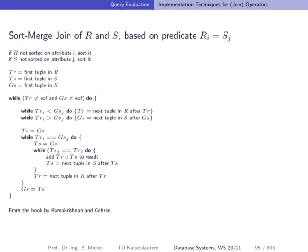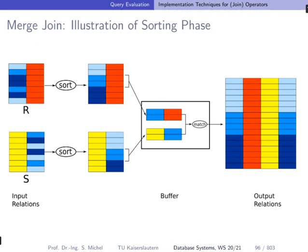Here's pseudo code taken from the book by Ramakrishnan and Gehrke, the pseudo code for the sort-merge join for a certain predicate, here again an equality predicate. You can go through that yourself, I don't want to explain that here.